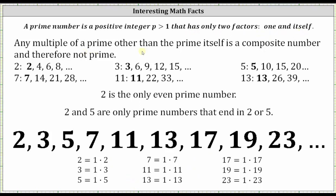Any multiple of a prime other than the prime itself is a composite number and therefore not prime because it would have more than two factors. Here I've listed out multiples of the first six primes. Notice how looking at the multiples, the only prime is the prime itself.